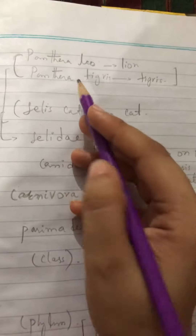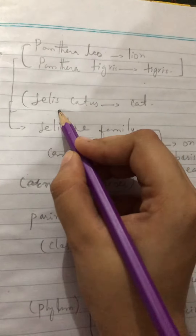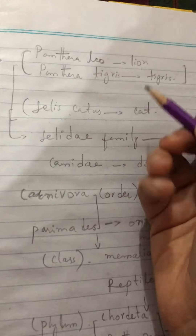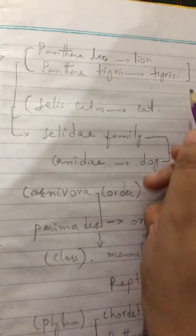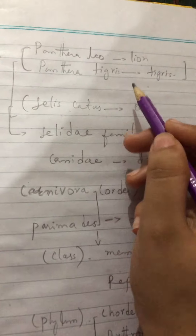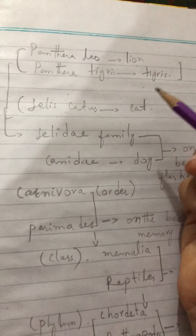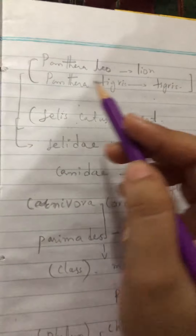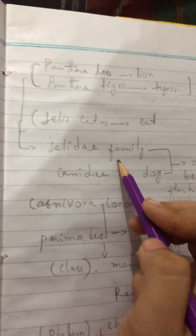Panthera leo is the lion and Panthera tigris is the tiger. The scientific name of cat is Felis catus. As we know, cat is also structurally similar to lion and tiger, though the sizes differ. We classify them based on structural similarities, not size. So Panthera and Felis are placed together in the same family — the Felidae family.